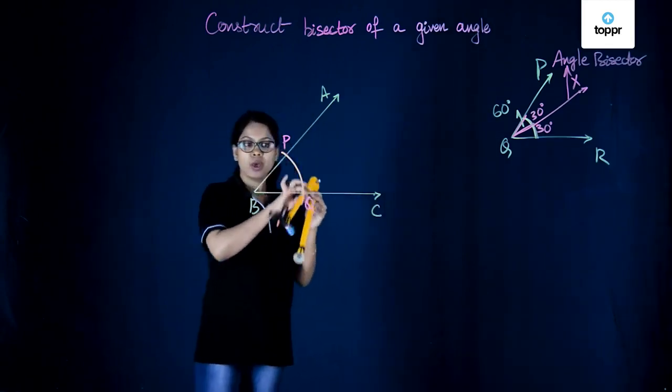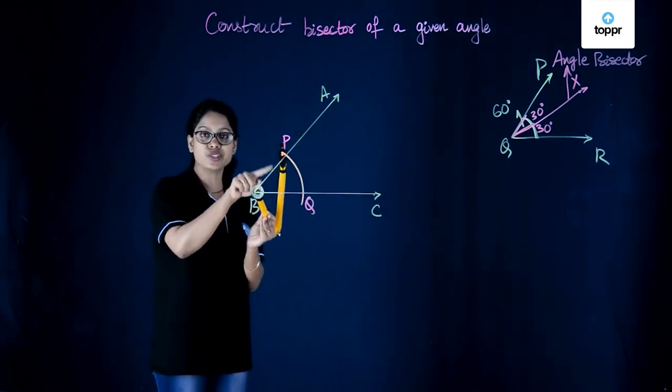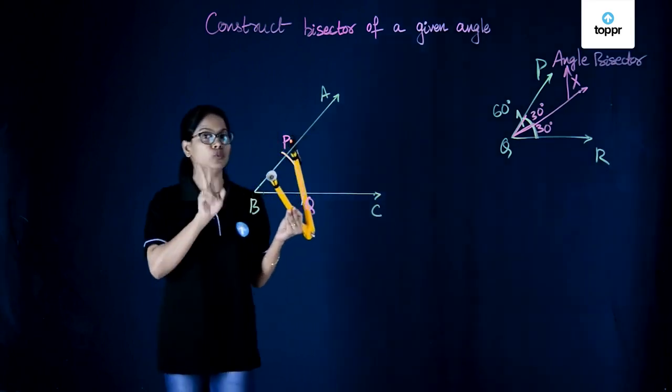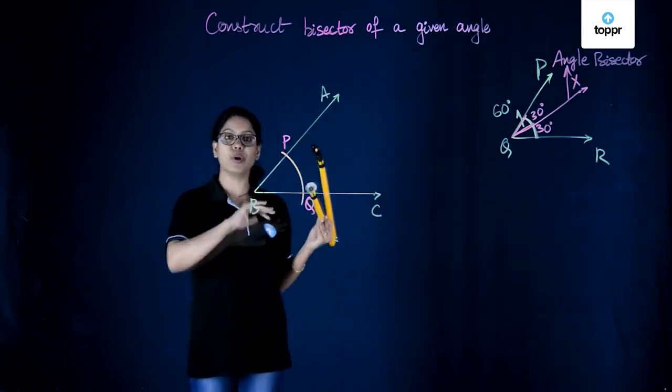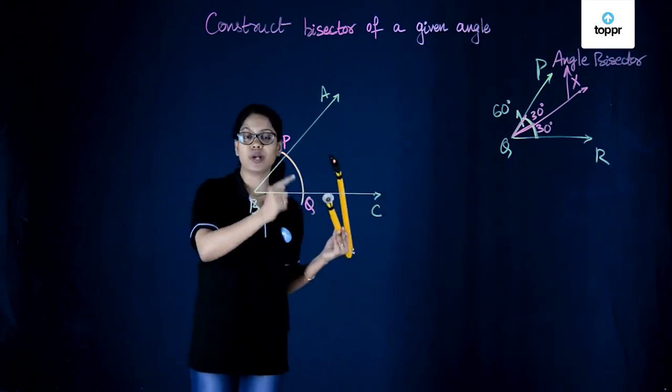In our next step, we take the same measure. This is the same measure of arc with which we drew the first arc. Now with the same measure, we'll cut two more arcs with two different points as centers. Once with P as the center and the second time with Q as the center.